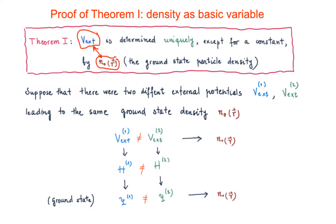Therefore, the ground state electronic density can determine any property of the system. Even though the theorem has very important consequences, you will see that the proof is really simple.